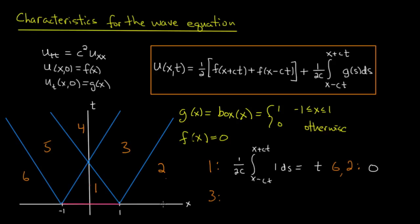So this integral becomes 1/(2c) times the integral from x-ct up to 1 of 1 ds. And I can compute that. That is (1 - x + ct)/(2c). Alright, so it's a little more interesting. I'll leave regions 5 and 4 to you to do.